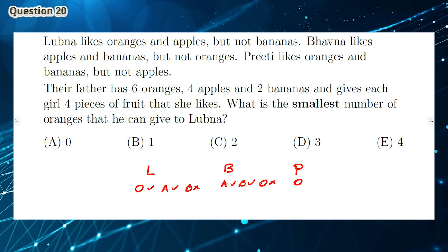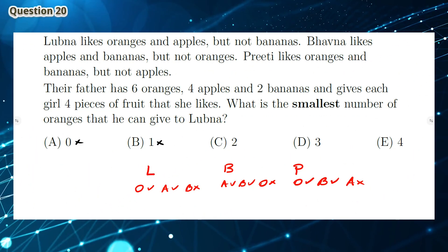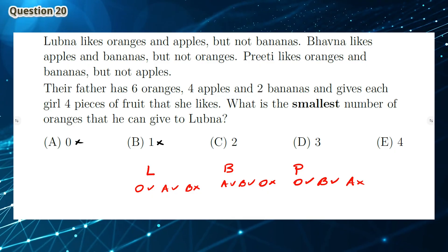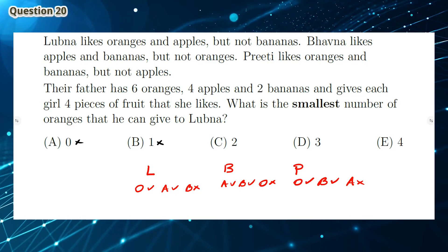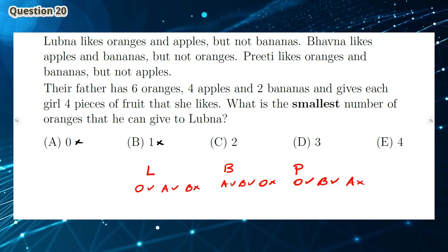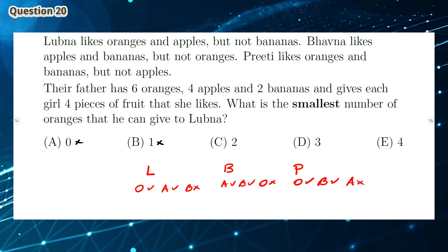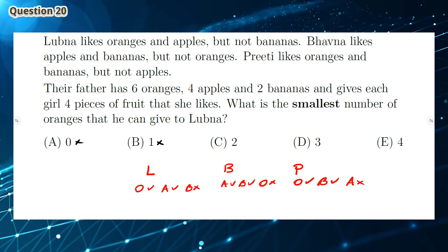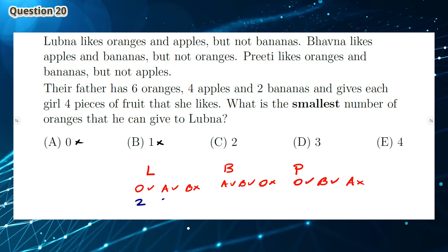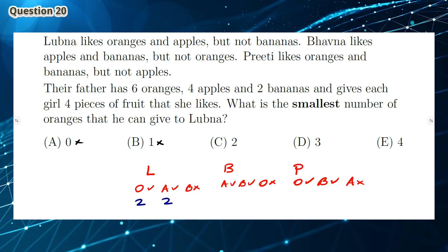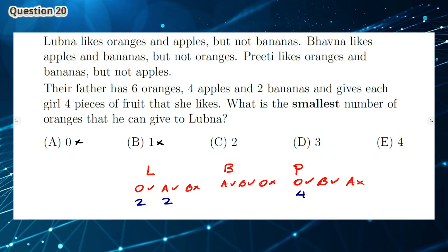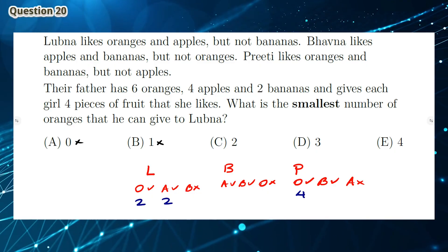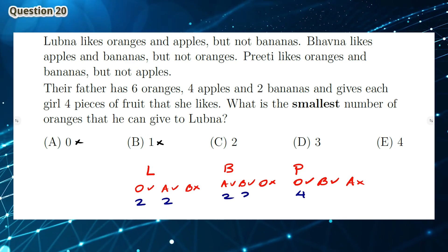Question 20: Lubna cannot have 0 or 1 pieces of oranges. Otherwise, Preeti would have to have more than 4 pieces of fruit. So let's try option C. If Lubna has 2 oranges, this means she has to have 2 apples. This means that Preeti has to have the other 4 oranges as she has 6 oranges. Also, Bhavna would have to have 2 apples and 2 bananas.